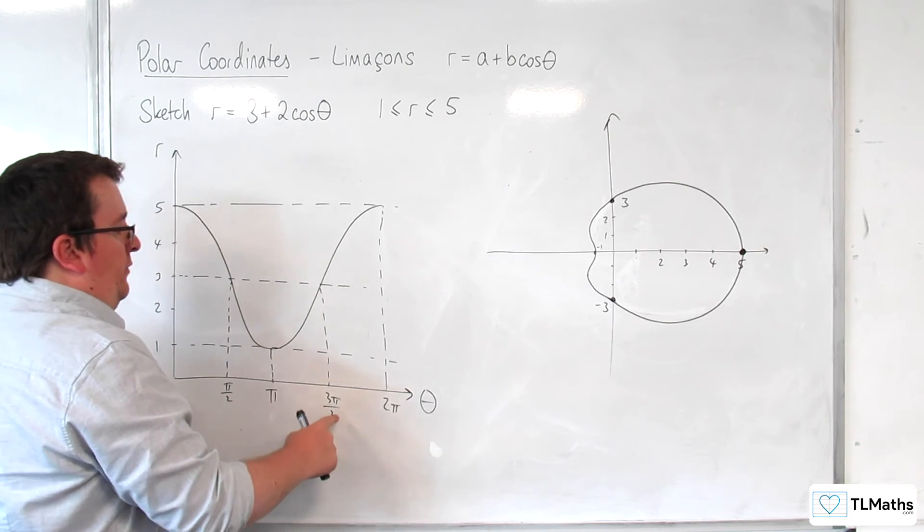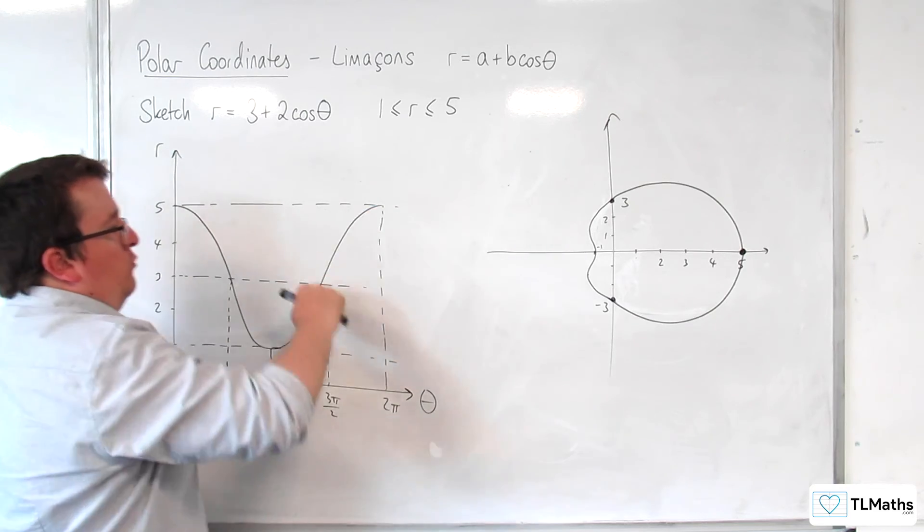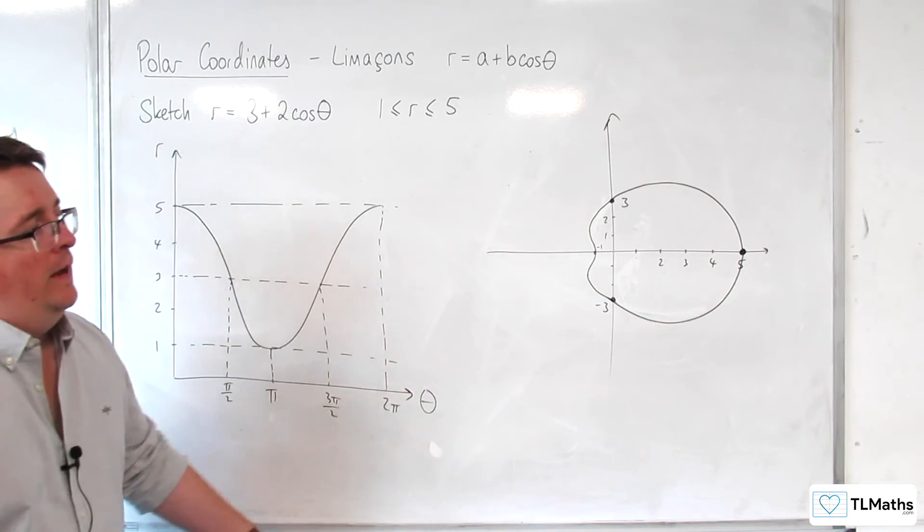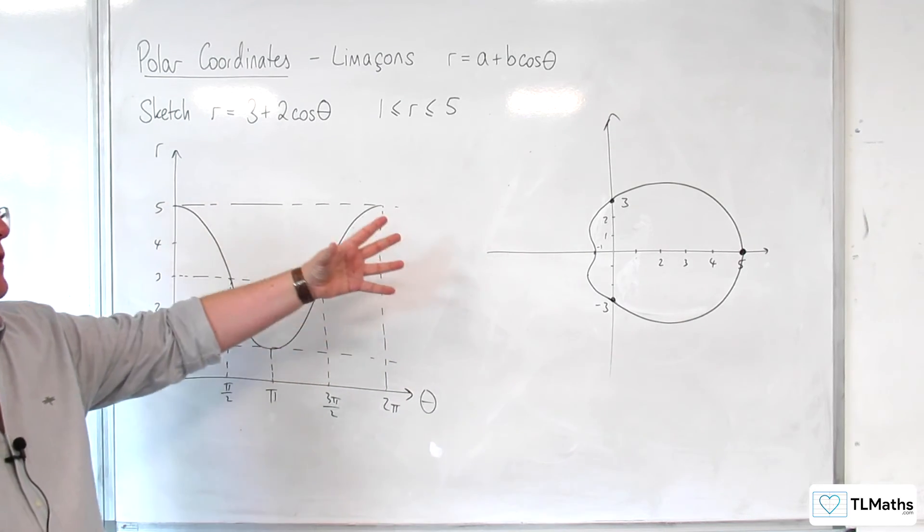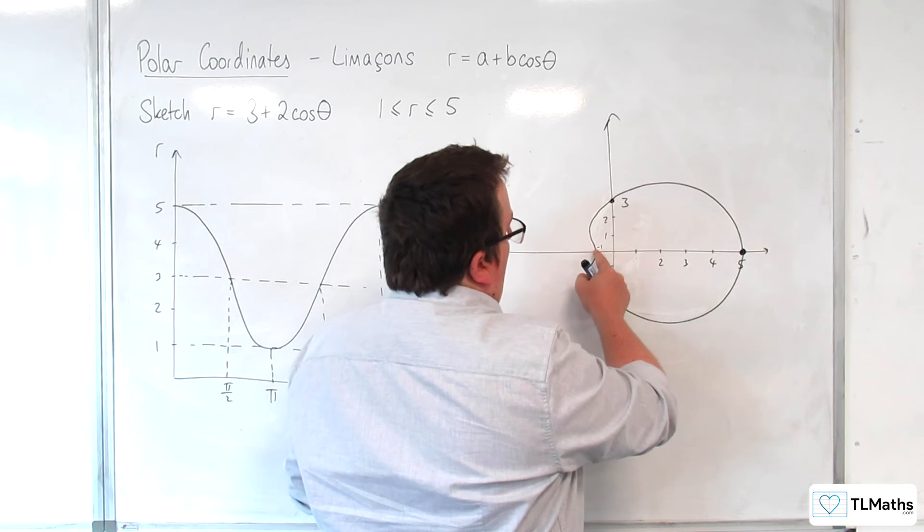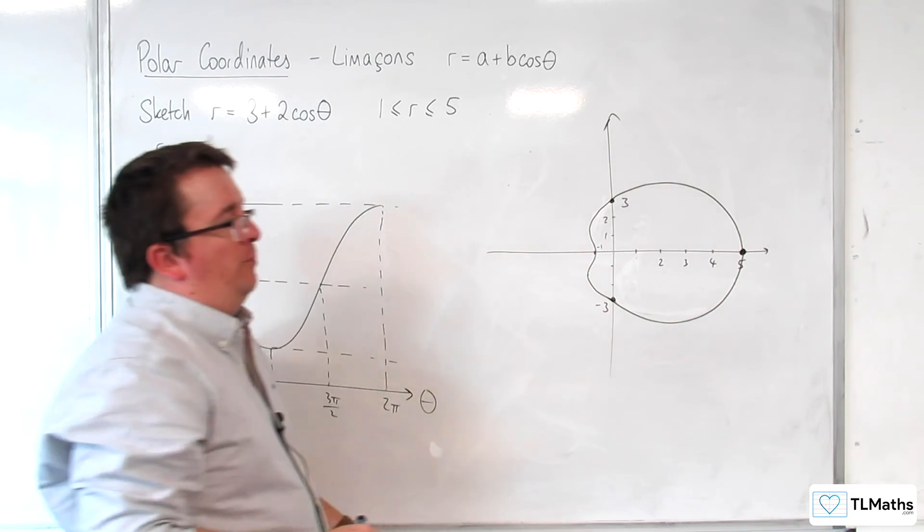So this is the curve that we get. So as theta increases from 3 pi over 2 to 2 pi, we come back round to r is 5.